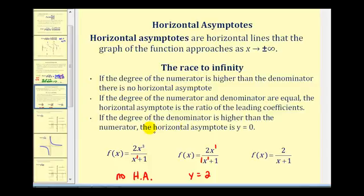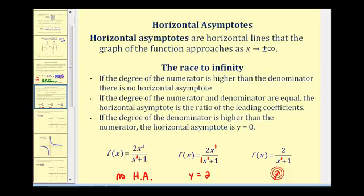Lastly, if the degree of the denominator is higher than the degree of the numerator, the horizontal asymptote will be y equals zero. In this third example the numerator has degree zero and the denominator has degree one. As x increases without bound, the numerator stays at two while the denominator increases without bound, so the function value approaches zero — making y equals zero the horizontal asymptote.